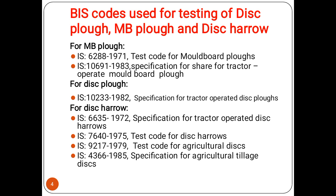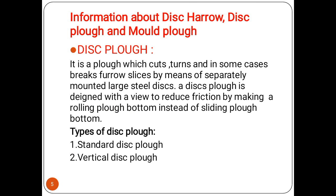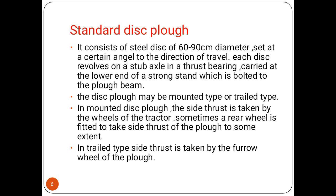The disk plow is the plow which cuts and in some cases breaks the furrow slice by means of separately mounted large steel disks. This plow is designed with a view to reduce the friction by making a rolling plow bottom instead of a sliding plow bottom. Types of disk plow are: standard disk plow and vertical disk plow.